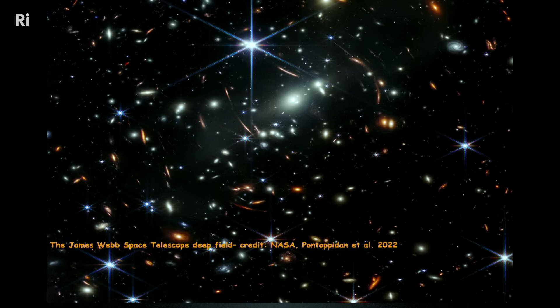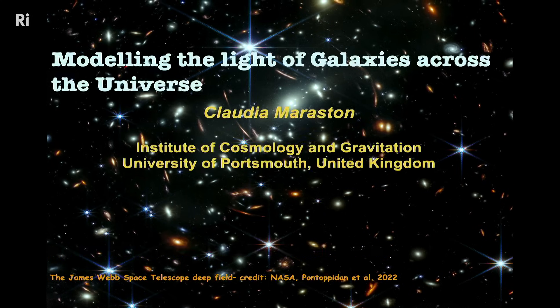All of those patches of light represent galaxies at various distances in cosmic time. This is called the James Webb Deep Field, and 'deep' means that by looking at these images, we actually look at the light that was sent by these galaxies shortly after the Big Bang.